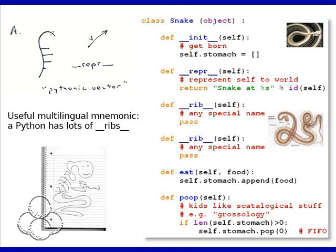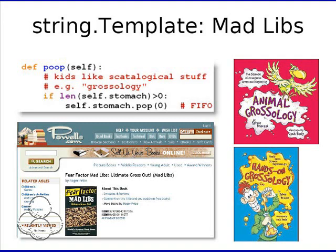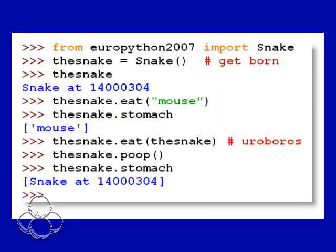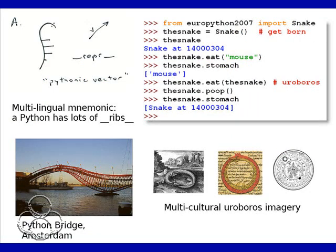Kids like scatological stuff — if you're going to eat, you also have to poop it out. So that's a good place to start talking about queues. Here we are with the snake: that code I just showed you is enough to drive this example — that's all you need. And here I get a little esoteric: I have the snake eat itself.